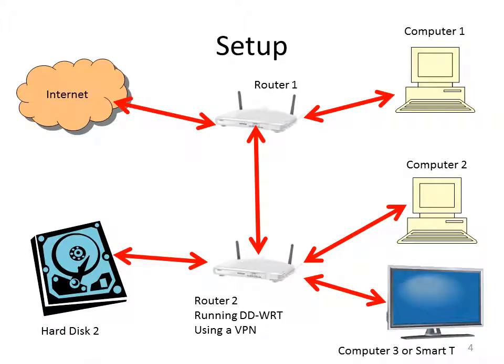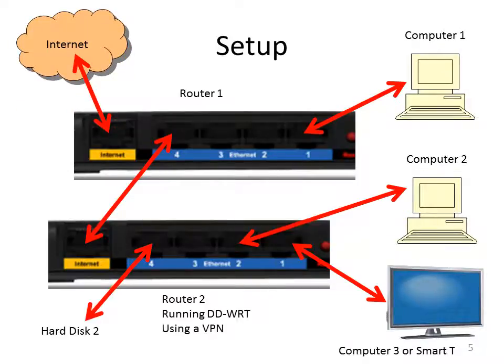My setup is as follows: we have router 1 connected to the internet via a modem. Computer 1 is attached to router 1, and then we have hard disk 2, computer 2, and a smart TV attached to router 2 running DDWRT using OpenVPN. For physical connections, computer 1 is attached to the ethernet connection of router 1, and computer 2, the smart TV, and the hard disk are also attached to the ethernet connection of router 2. The interconnect connection of router 2 is connected to the ethernet connection of router 1 — this is personally the only way I've found to connect router 2 to router 1 and keep the VPN client running.